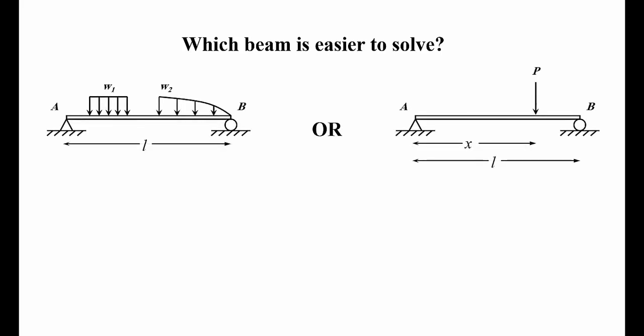Welcome back to another tutorial. In this tutorial we're going to discuss an idea — something we need to understand to feel more comfortable solving problems. This idea relates to how you can turn a difficult problem into an easier one. Let me start by asking: if I gave you a choice of solving two beams, which one would you choose — which beam is easier to solve? By 'easier' I mean just getting the reaction at supports A and B.